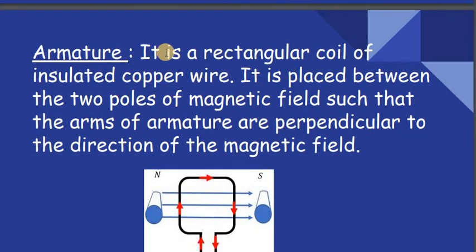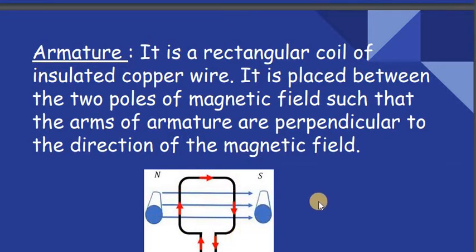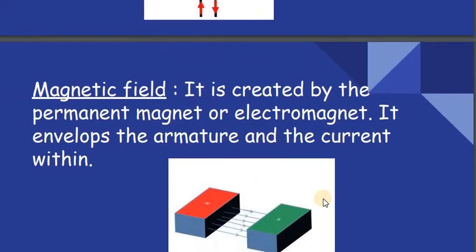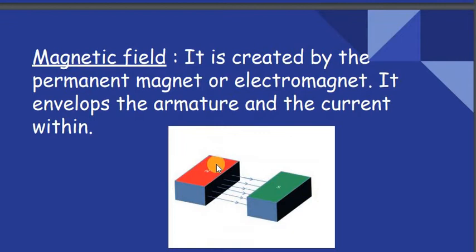The armature is a rectangular coil of insulated copper wire placed between the poles of the magnetic field such that the arms of the armature are perpendicular to the direction of the magnetic field. The magnetic field is created by a permanent magnet or electromagnet, which envelops the armature and the current within it.